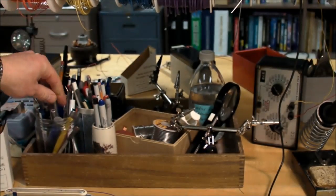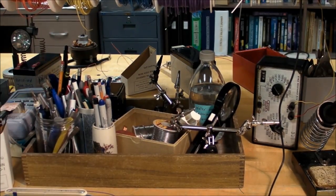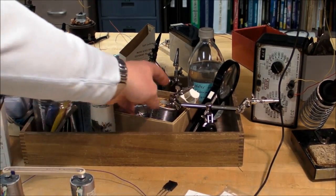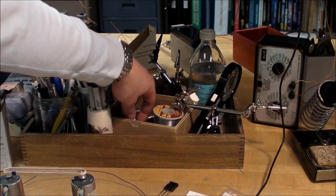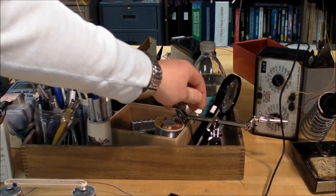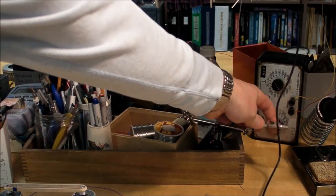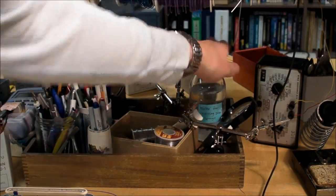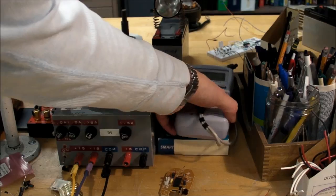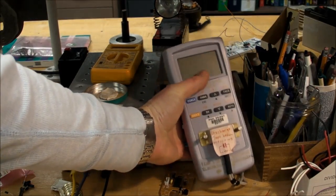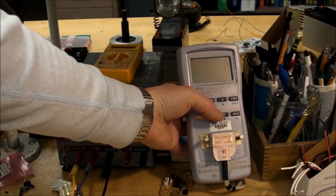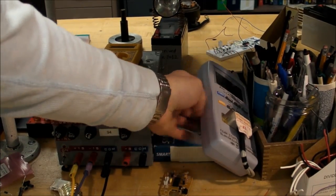And got soldering stuff in here - solder sucker and solder wick and all that stuff is in there. Helping hands there. Water for the sponge. There's an RSR model 2821 LCR meter.